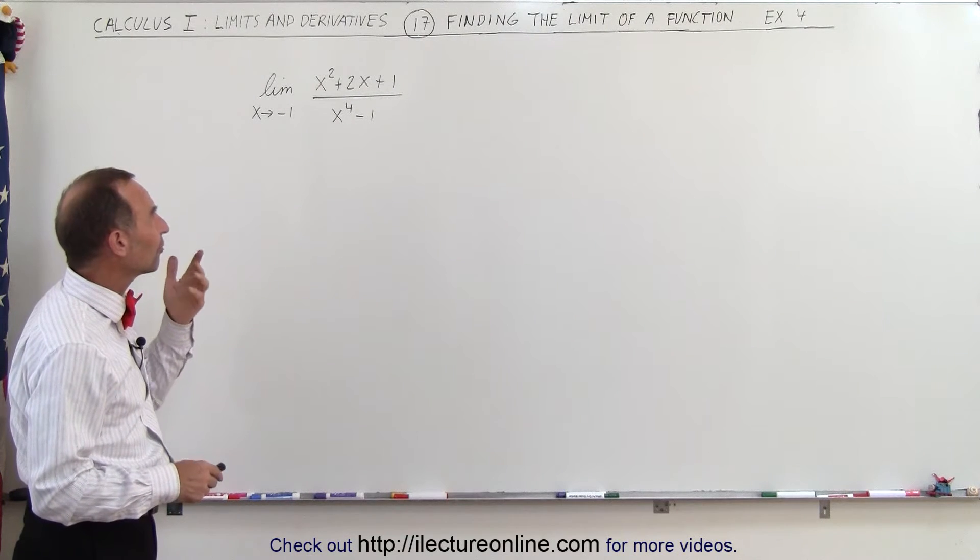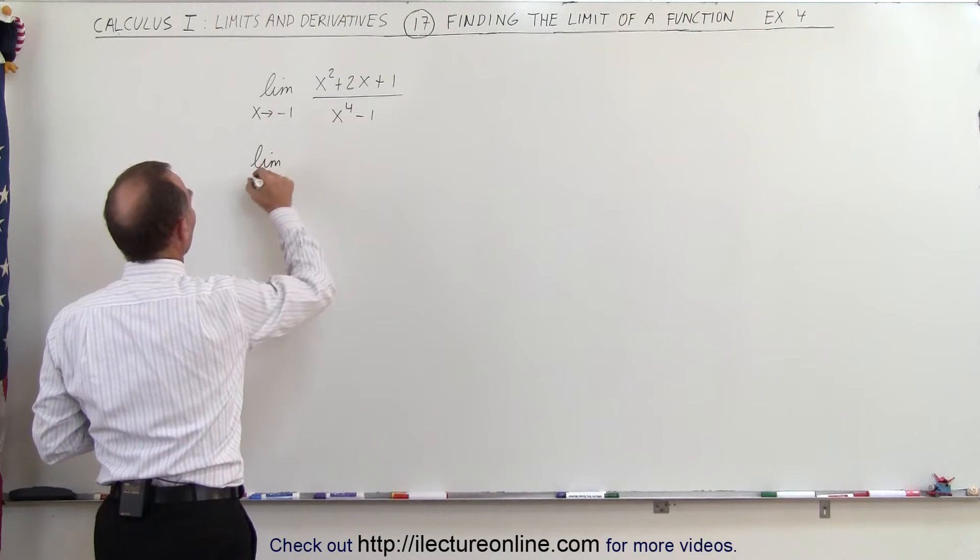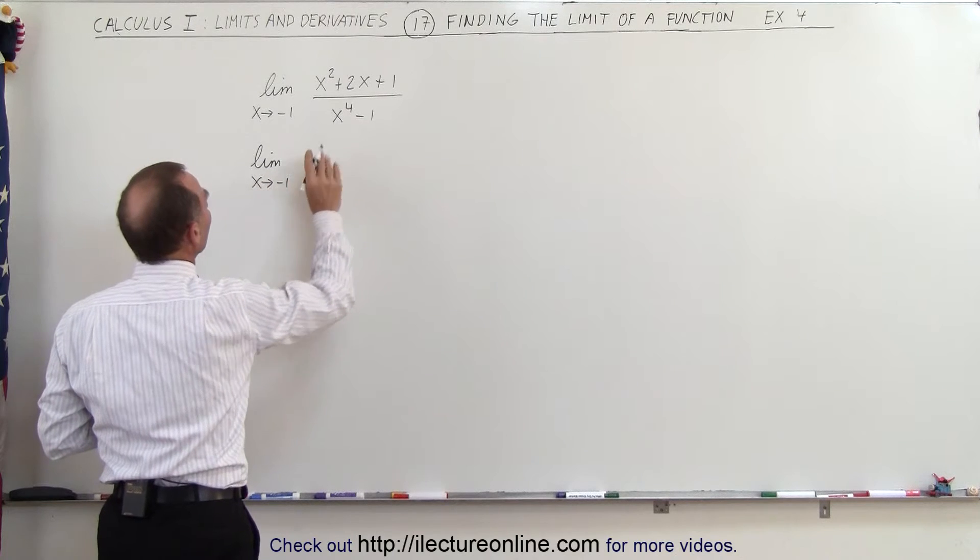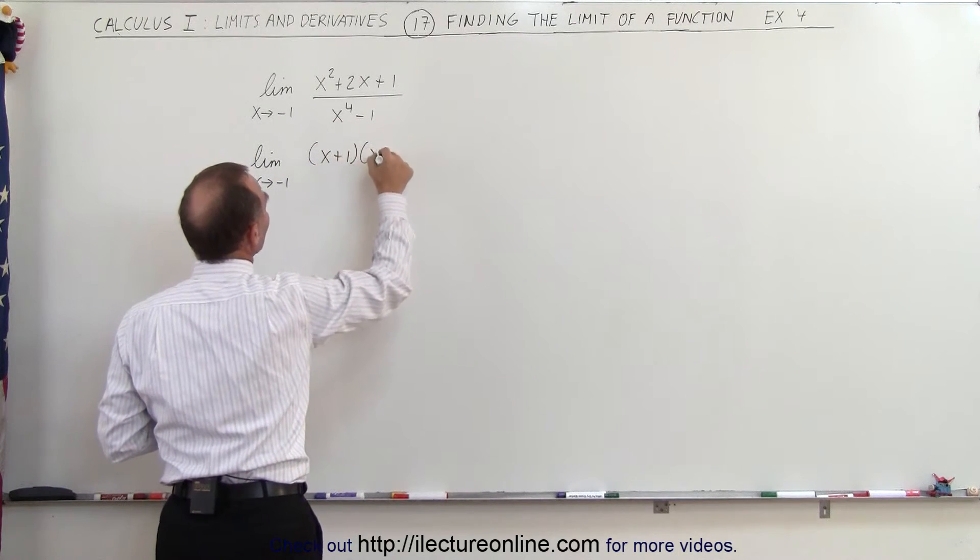So what we need to do instead is factor this out and see what we can do. We take the limit as x approaches negative 1. The numerator can be factored as x plus 1 times x plus 1.